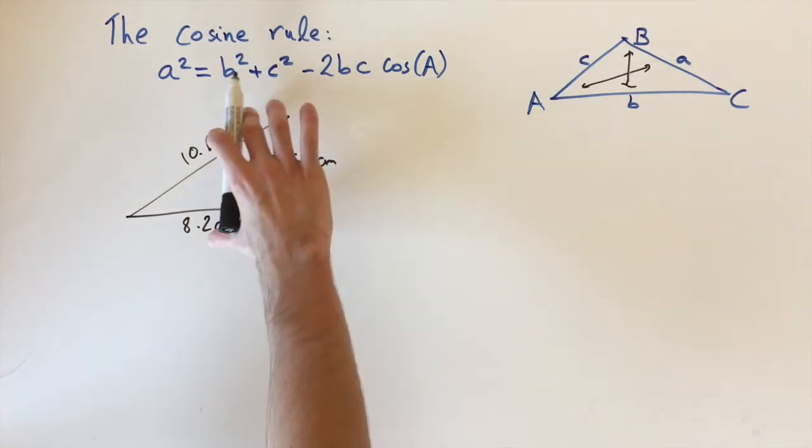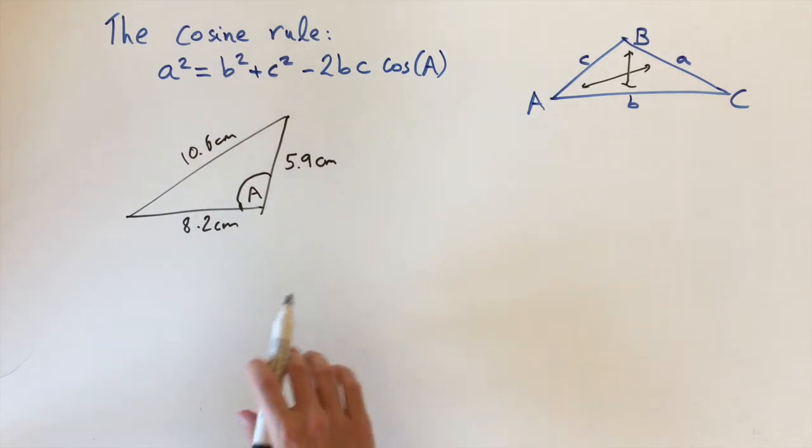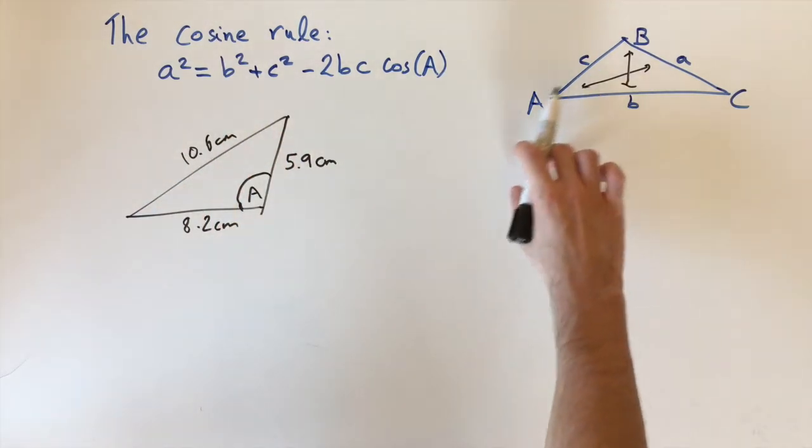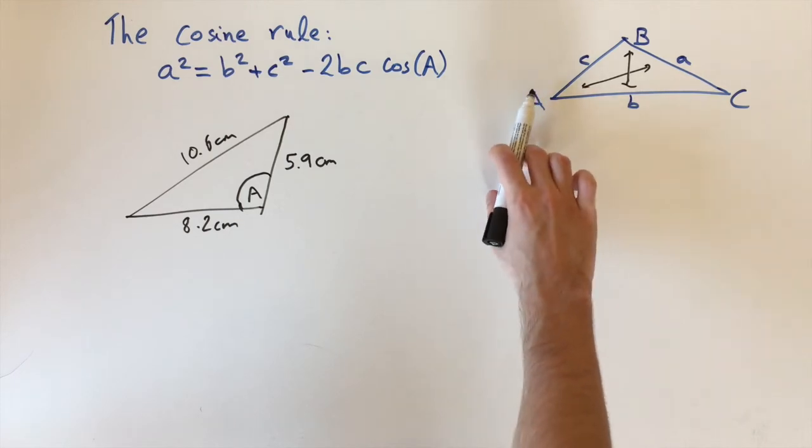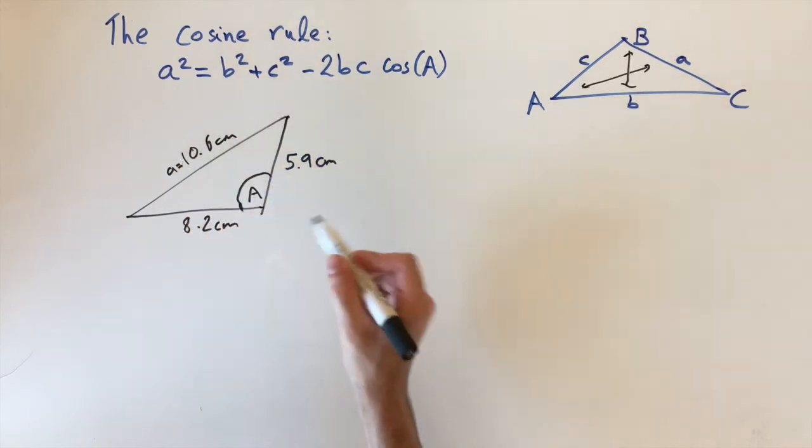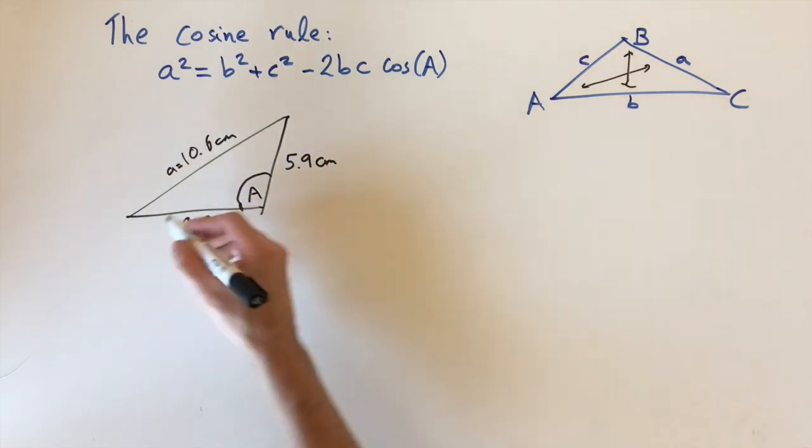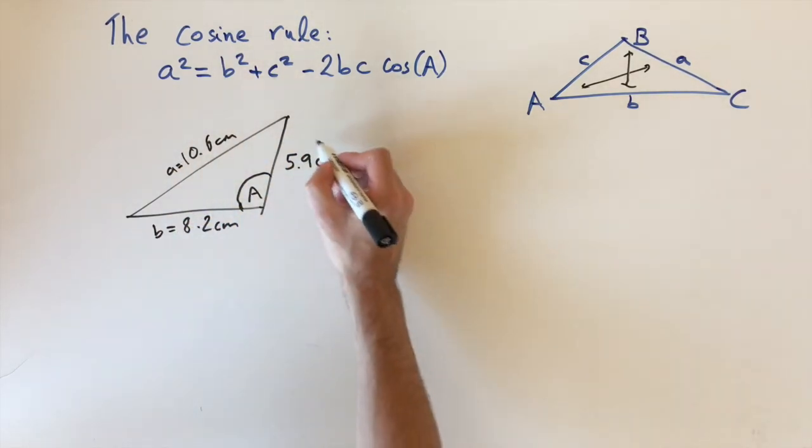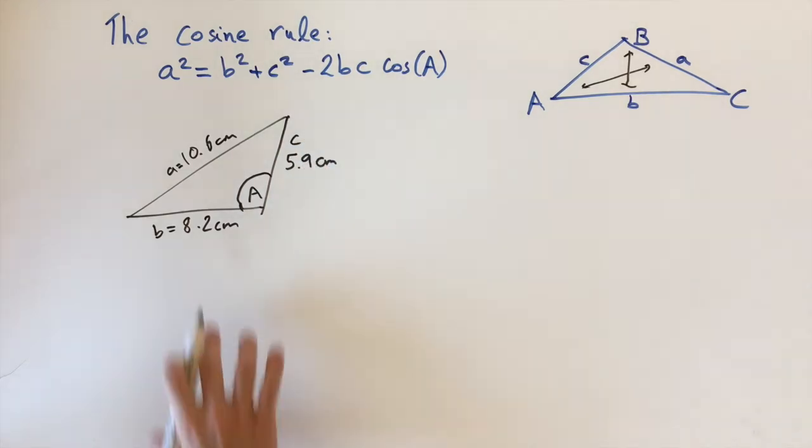To use this formula, we need to decide which lengths are a, b, and c. Remember, the angle capital A has to be opposite the length little a. So this tells us that this length is little a, and then the other two sides don't actually matter, so I can call this one b and this one c.